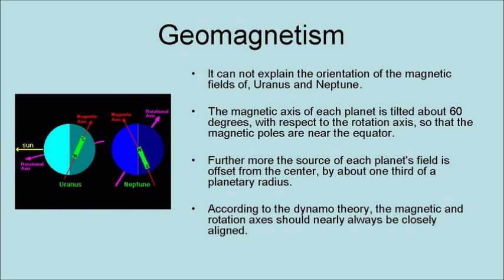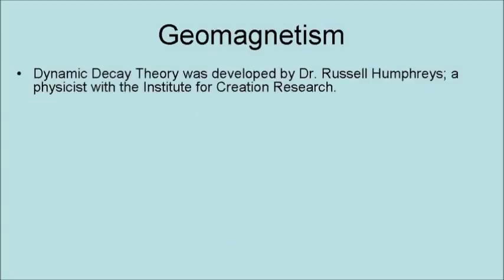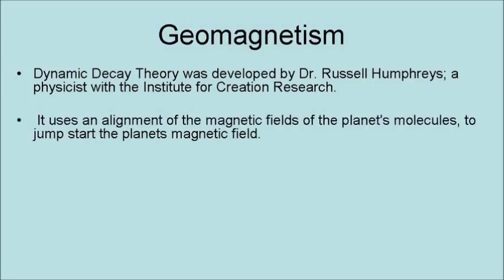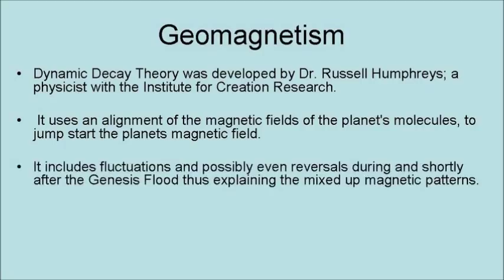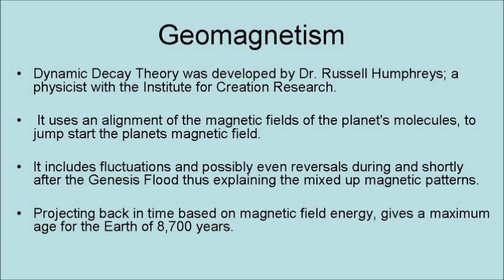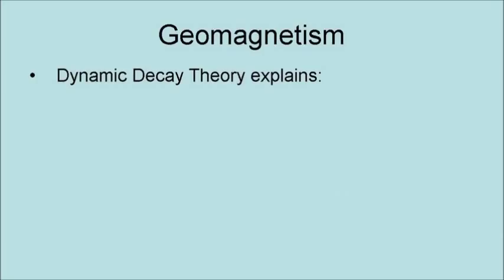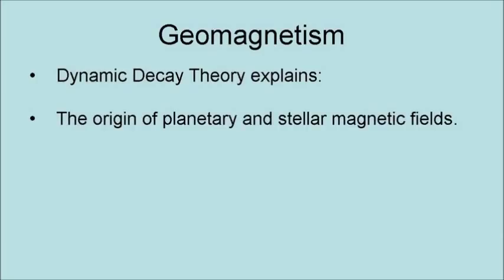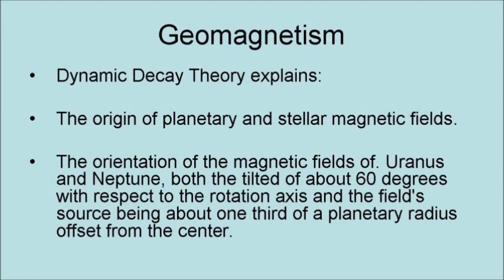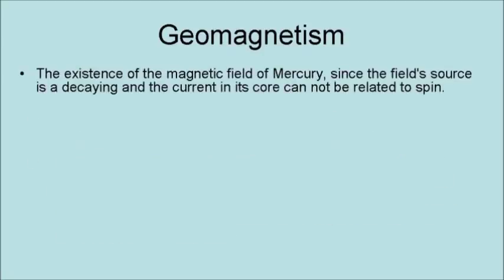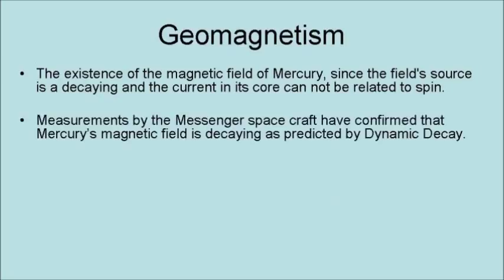Dynamic Decay Theory was developed by Dr. Russell Humphreys at the Institute for Creation Research. It uses an alignment of the magnetic fields of the planet's molecules to jumpstart the planet's magnetic fields, and includes fluctuations and possibly even reversals during and shortly after the Genesis Flood, thus explaining the mix-up of the magnetic patterns. Projecting back in time based on magnetic field energy gives a maximum age for the Earth of 8,700 years. Dynamic Decay Theory explains the origin of planetary and stellar magnetic fields, the orientation of the magnetic fields of Uranus and Neptune — both tilted 60 degrees with respect to the rotation axis — and the field source being about one-third of a planetary radius offset from the center. It explains the existence of Mercury's magnetic field, since the field source is decaying and the current in its core cannot be related to spin. Measurements by the MESSENGER spacecraft have confirmed that Mercury's magnetic field is decaying as predicted by dynamic decay.